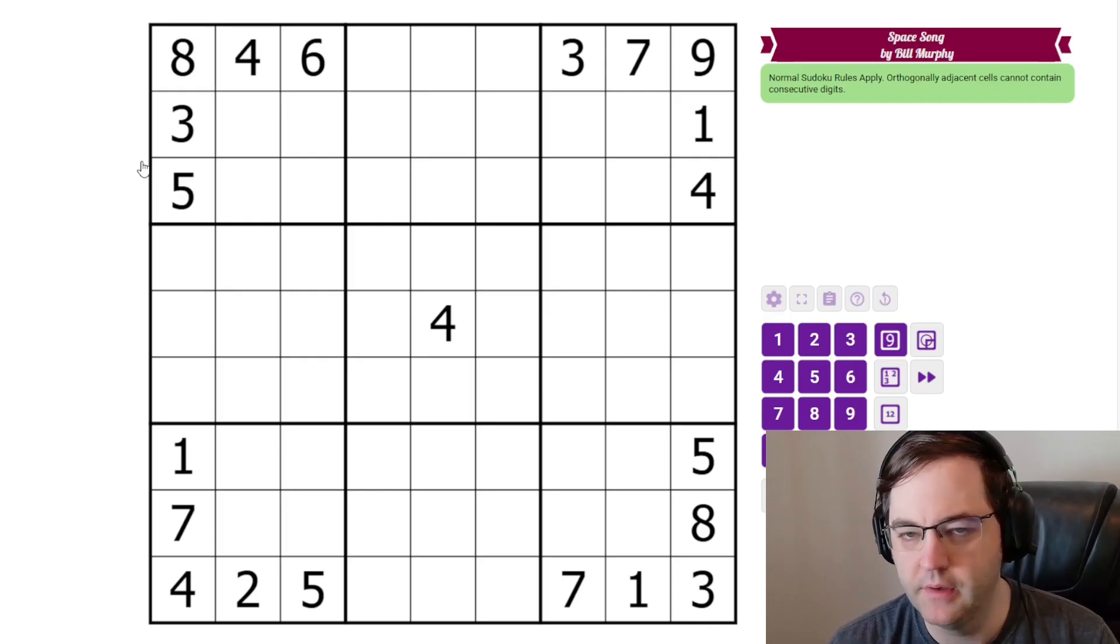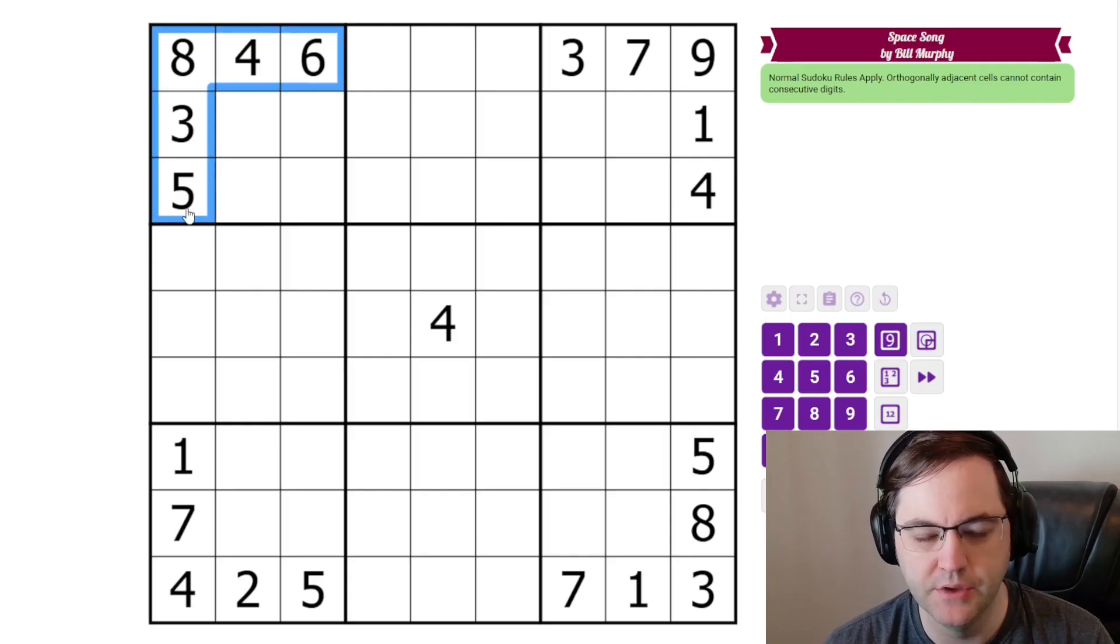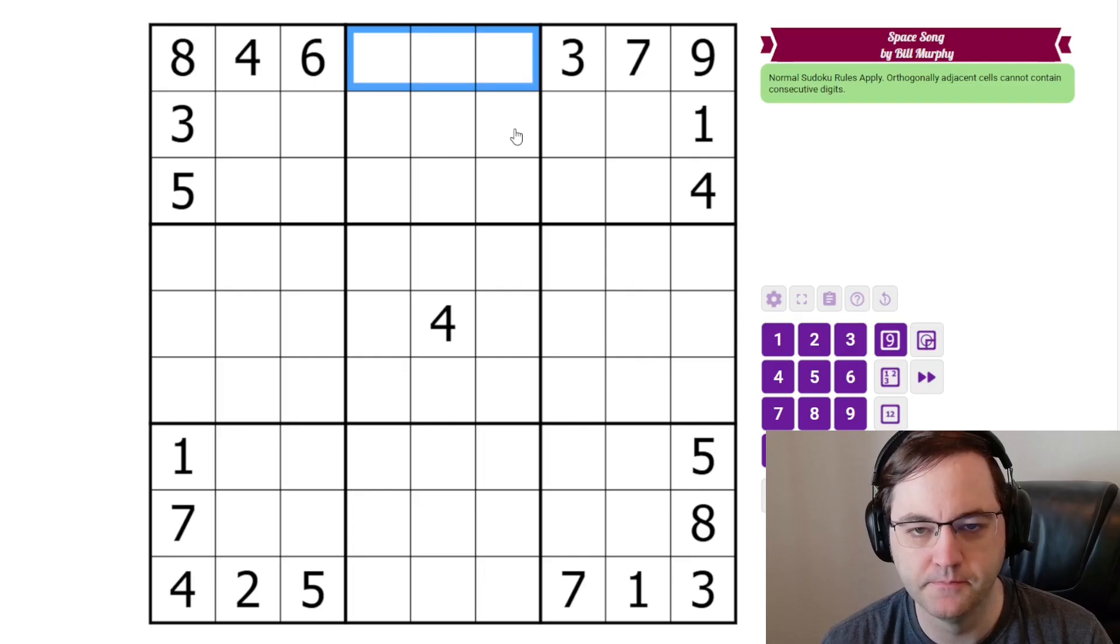And we've got two places we could start here. Bill has given us a lot of digits on the edges. I think when I test solved this, I started in the boxes, but I'm going to start in the rows and columns this time.